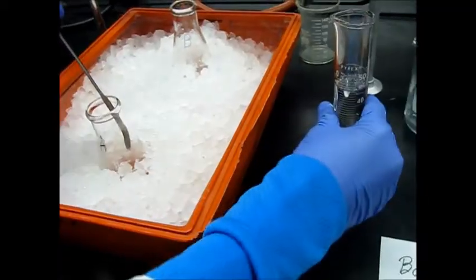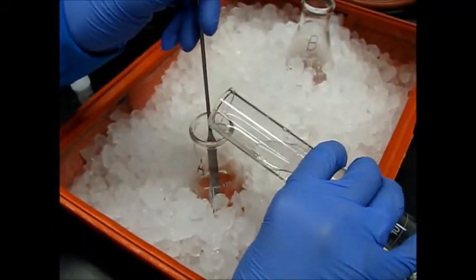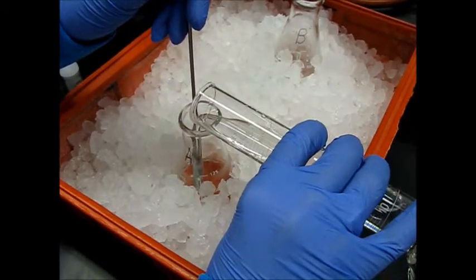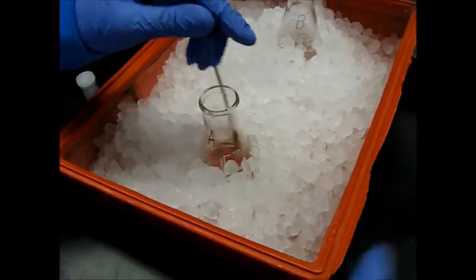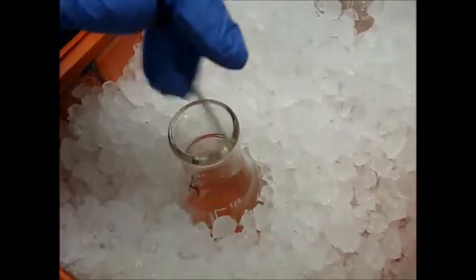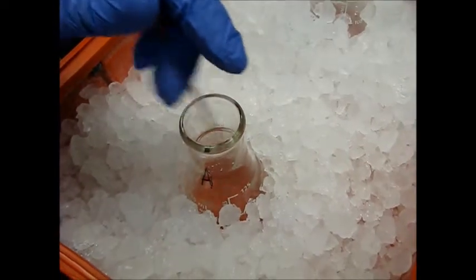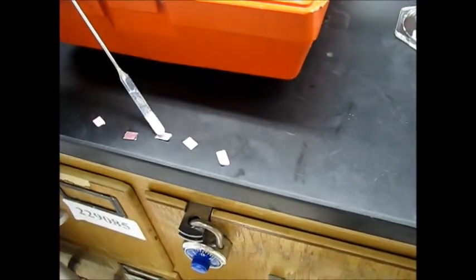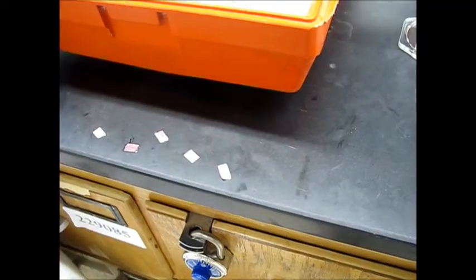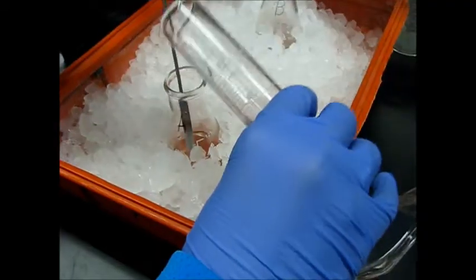So now we will start adding NaOH. I'll start by adding around 15 milliliters and stirring. We can then test the pH again using the litmus paper and it's still red we can see. So I will add another 15 milliliters.